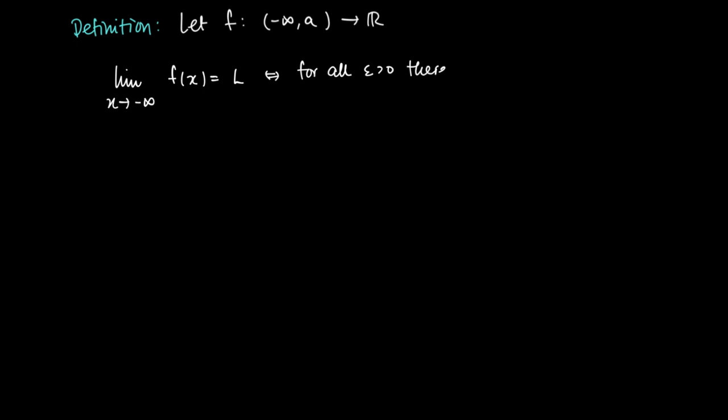If for all ε > 0, there is a number N_ε in ℝ such that when x < N_ε, this implies that the difference between f(x) and L is small, at least smaller than ε.